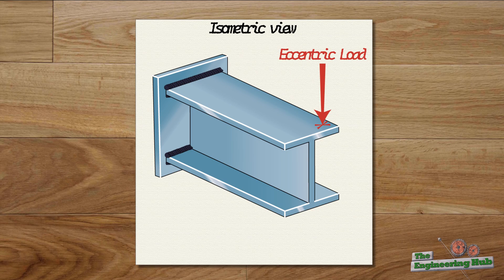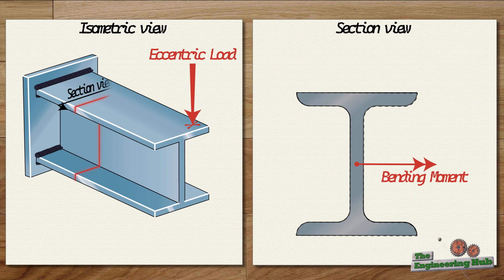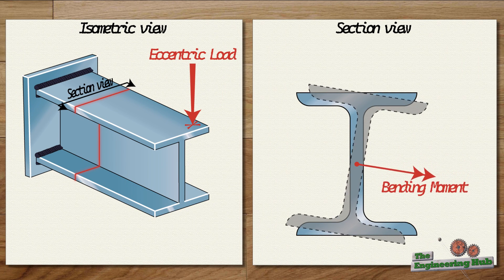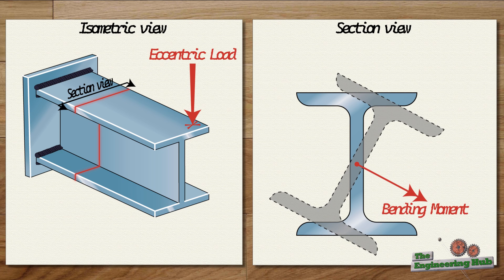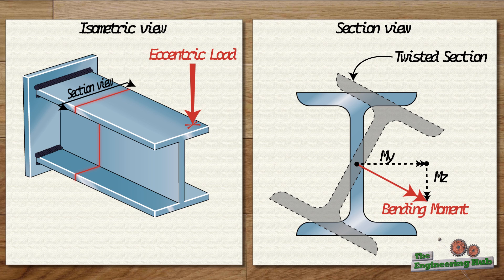Another point is the P-delta effect. When the section is twisted, the moment that was initially bending the beam about its strong axis gets propagated to the weak axis as well — in essence, the moment vector is decomposed into its y and z components. This effect is usually not too significant, but it could have a large contribution if the angle of twist is excessive.